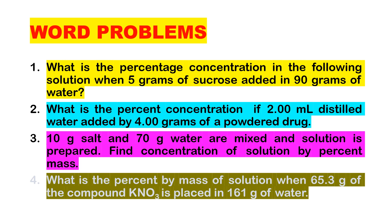Word problem number one: what is the percentage concentration in the following solution when five grams of sucrose is added to 90 grams of water? Number two: what is the percent concentration if 2.00 ml of distilled water is added to 4.00 grams of powdered drug?